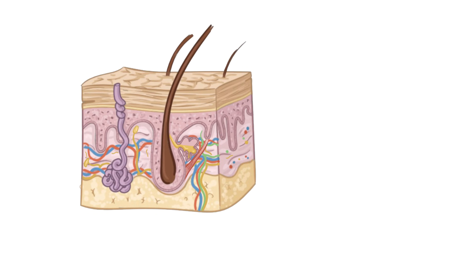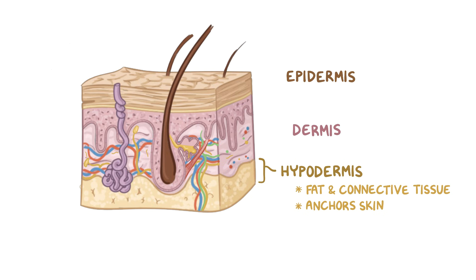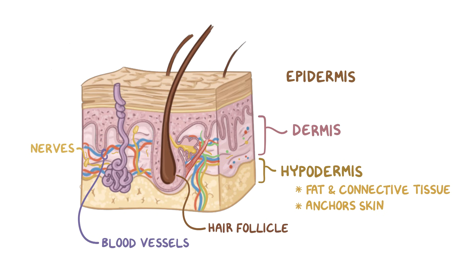The skin is divided into three layers: the epidermis, dermis, and hypodermis. The hypodermis is made of fat and connective tissue that anchors the skin to the underlying muscle. Just above is the dermis, which contains hair follicles, nerves, and blood vessels.